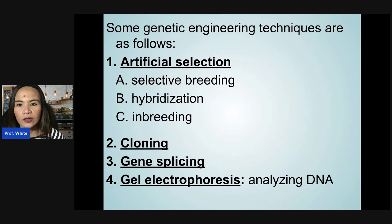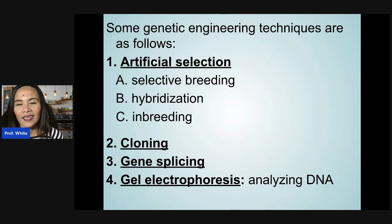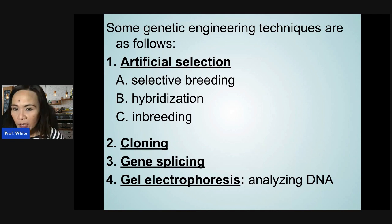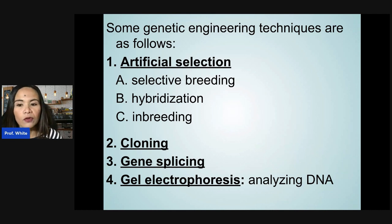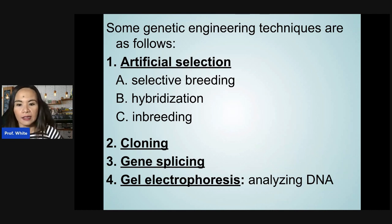Some genetic engineering techniques are as follows. First, the most common is artificial selection, which includes selective breeding, hybridization, and inbreeding. The second one is cloning. The third is gene splicing and gel electrophoresis, which is analyzing the DNA.